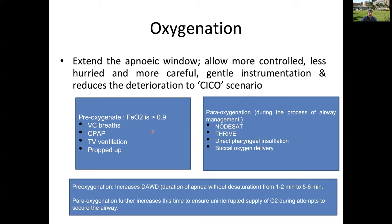Pre-oxygenation methods include vital capacity breathing, CPAP, tidal volume ventilation for 3-5-7 minutes, and proper positioning — the endpoint is FetO2 greater than 0.9. For apneic oxygenation during airway management, we can use nasal oxygen, THRIVE, direct pharyngeal insufflation, or buccal oxygen delivery. Whatever method is used, oxygen must be given during airway handling to extend the time to desaturation during intubation attempts.